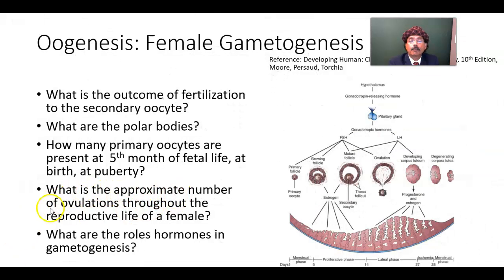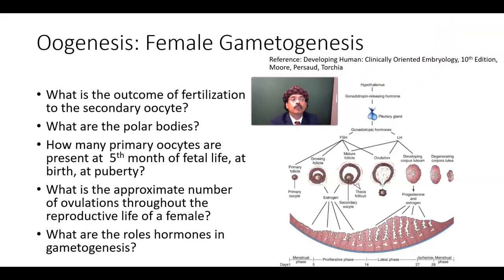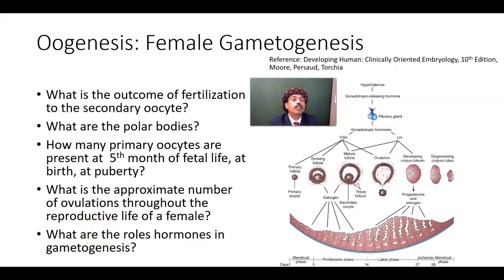What is the approximate number of ovulations throughout the reproductive life of a female? Assuming a 28-day cycle, around 12 ovulations occur per year. If a woman has 40 years of reproductive life from puberty to menopause, that is 40 times 12, approximately 480 ovulations. However, this is reduced during pregnancy, when taking oral contraceptive pills, or under stressful situations — but the maximum is approximately 480 ovulations.